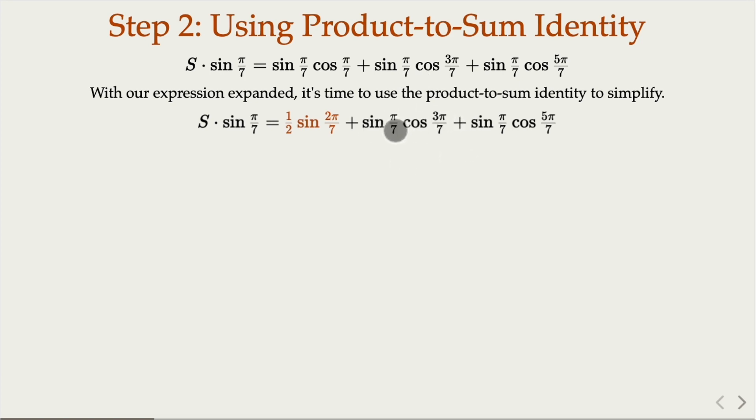Now for this term, when we use the earlier identity that becomes sine the sum which is 4pi over 7. The difference here pi minus 3pi would be negative 2pi. So in other words, this term here turns into this sum here.